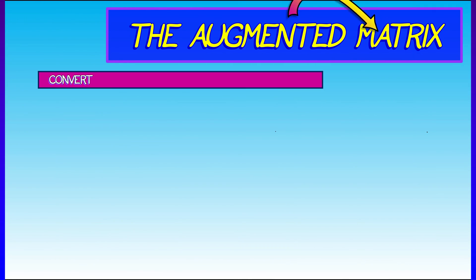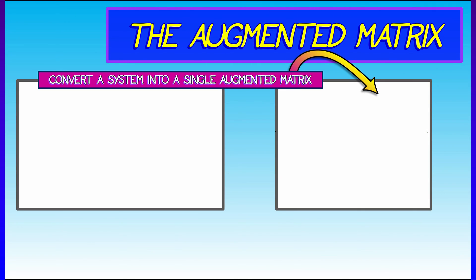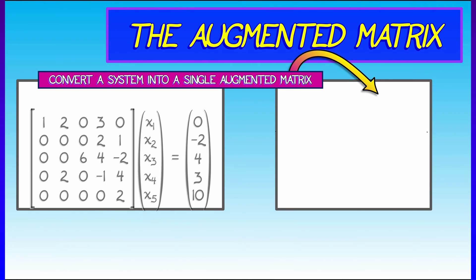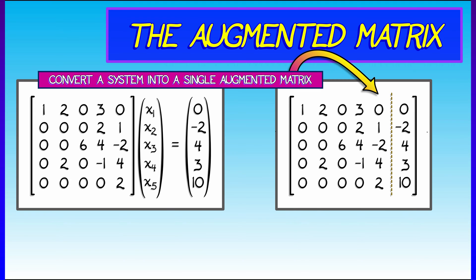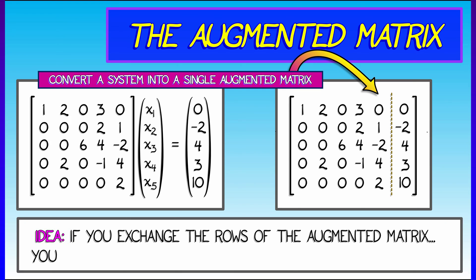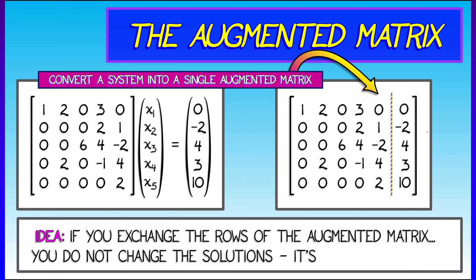The idea is we're going to take a system of the form Ax equals b and convert it into one augmented matrix, by writing the matrix A on the left-hand side, then putting in a dashed line, and then including the vector b off to the right. This one augmented matrix encodes the entire system.